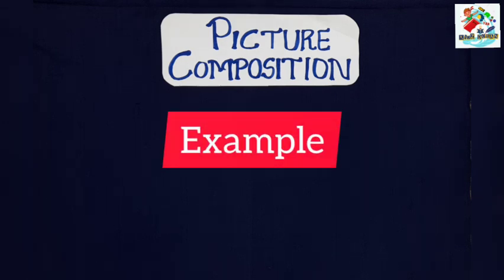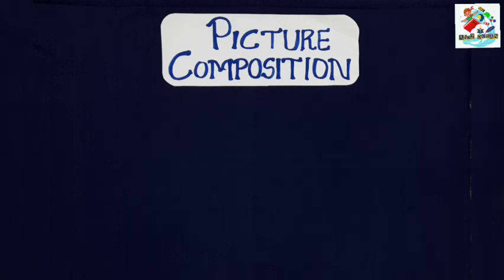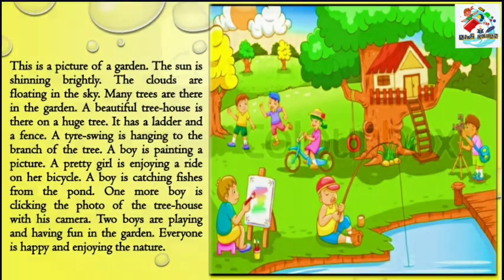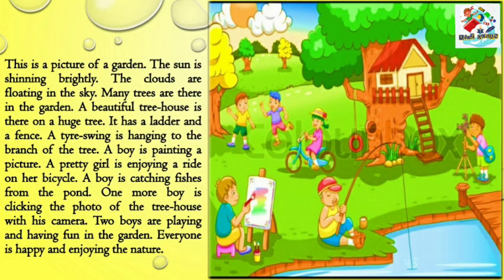Teacher: Archit, please describe this picture in your own sentences. Archit: Okay teacher. This is a picture of a garden. The sun is shining brightly. The clouds are floating in the sky. Many trees are there in the garden. A beautiful tree house is there on a huge tree — it has a ladder and a fence. A tire swing is hanging from the branch of the tree. A boy is painting a picture. A pretty girl is enjoying a ride on her bicycle. A boy is catching fishes from the pond.